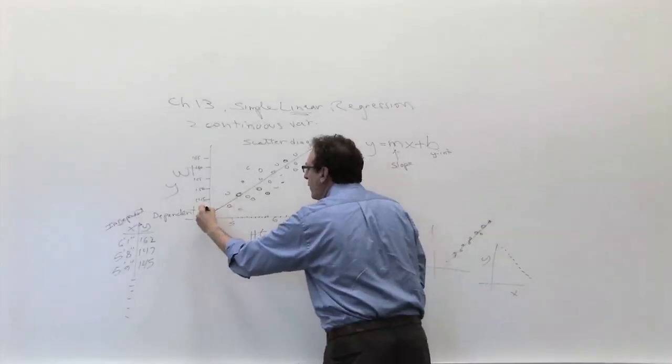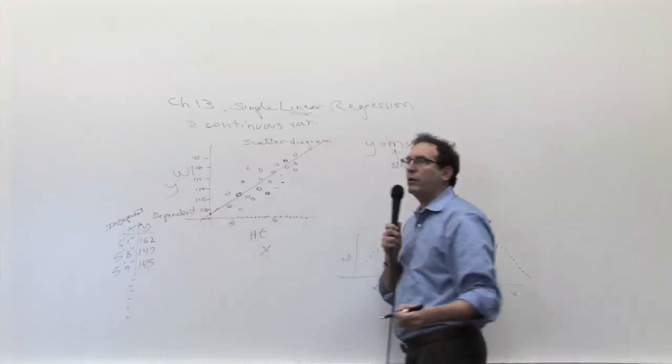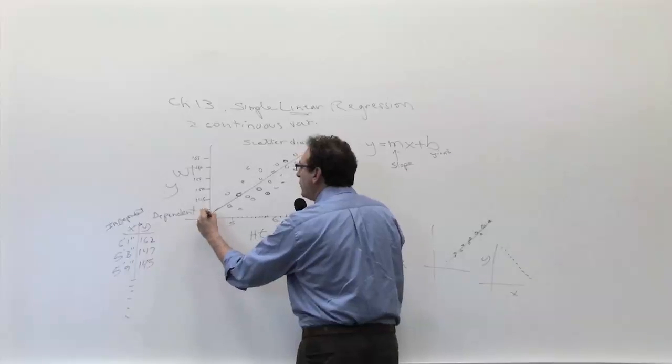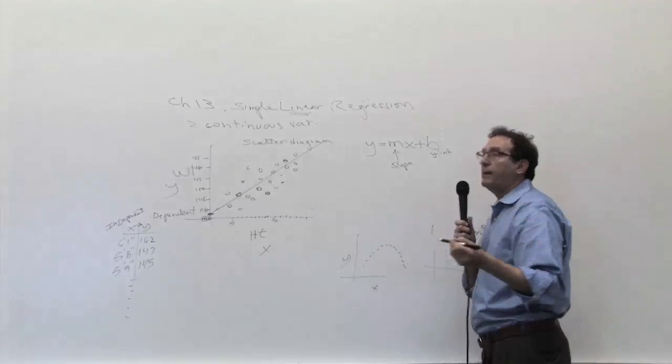So in this case, I would guess the y-intercept would be around, this is 140. This is about 142, more or less. I'm sorry. If this is 140, this is 135. So this would be about 137. So if you had to write out the equation, you would say, now let's talk about the slope per minute.